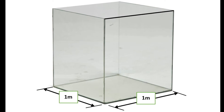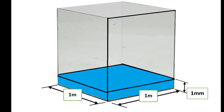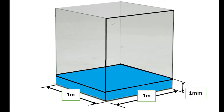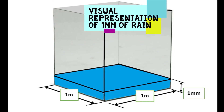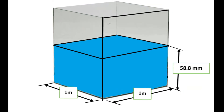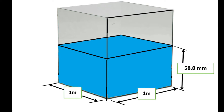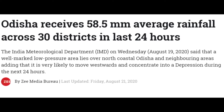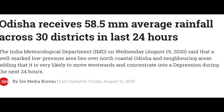If we take a square box of 1 square meter and pour water in it up to the height of 1 millimeter, then the amount of water accumulated in the box will be equivalent to 1 millimeter of rain. If we fill that box to a height of 58.5 millimeters, then it represents the rainfall of 58.5 millimeters.